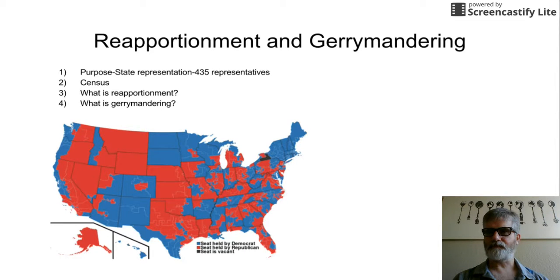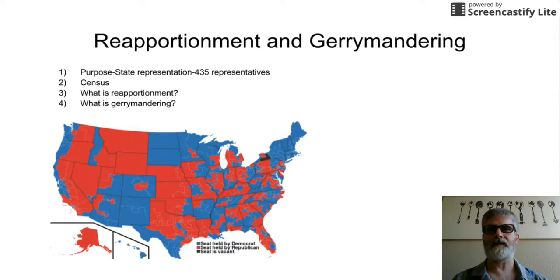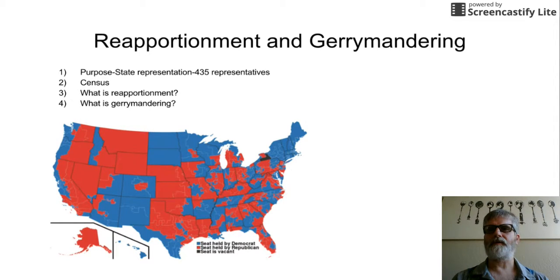Now gerrymandering — state legislatures are responsible for creating the districts. So now we have to get nine districts in Arizona where we had eight before. They have to divide up the state and divide up the population, roughly about 650,000 per representative. Some do it very politically — if you have a Republican or Democratic legislature, they actually draw districts to their benefit.